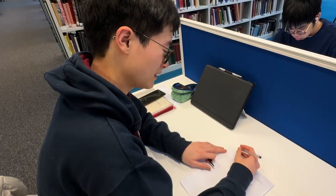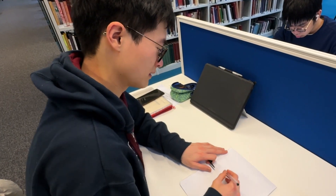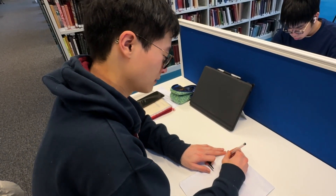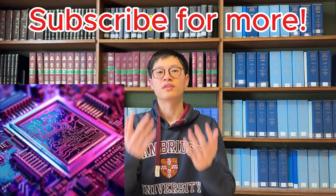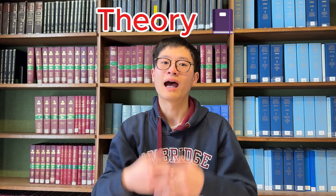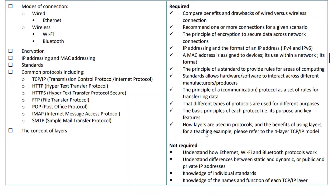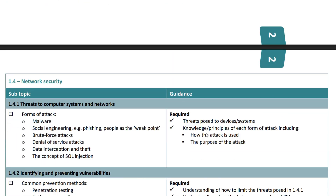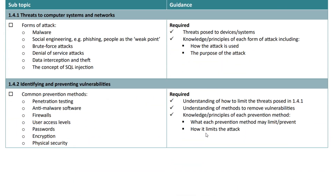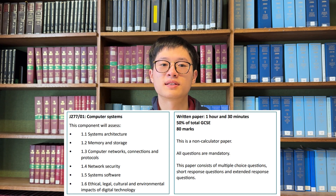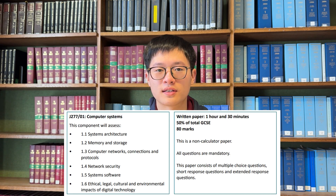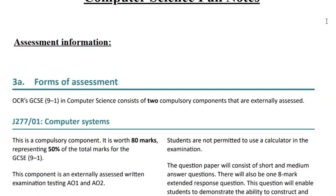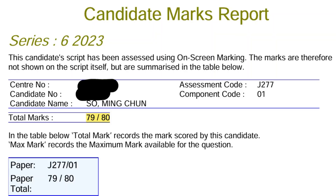I'm going to be telling you the revision and exam techniques I implemented for both the theory and programming aspects. However boring you think it is, there's no escaping computer science theory as it makes up 50% of your GCSE. Having good revision notes is especially crucial to success in the theory paper.